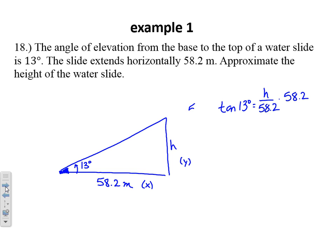Remember, tangent 13 degrees is just a decimal. So H equals, in the calculator, let's type in 58.2 times the tangent of 13, and I get 13.43. That doesn't quite seem right. We are in degree mode. Oh yeah, we're in meters.